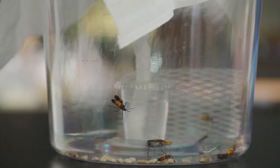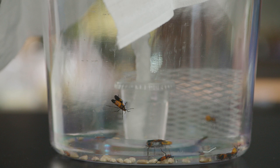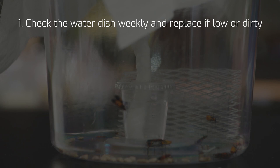Number one, check the water dish weekly and replace if low or dirty. Number two, remove any moldy, dirty, or shrunken sunflower seeds and replace them with fresh sunflower seeds.